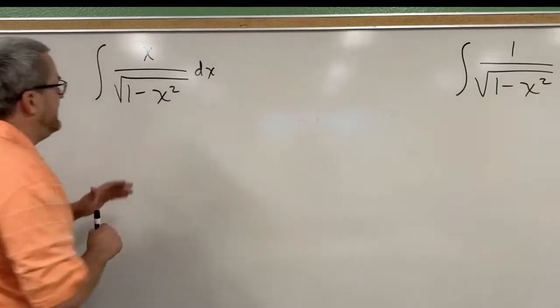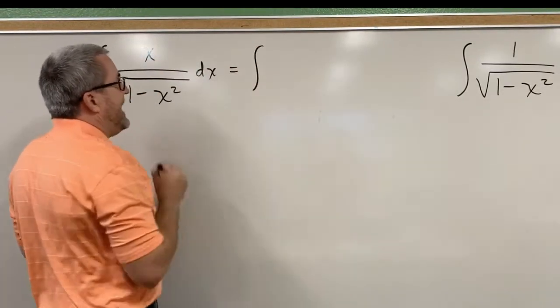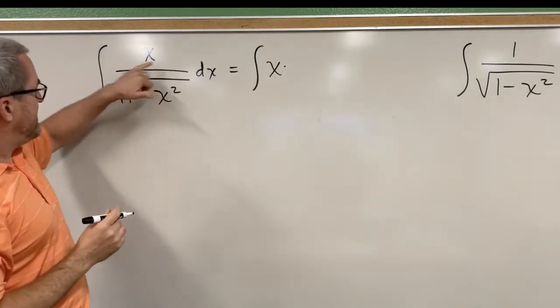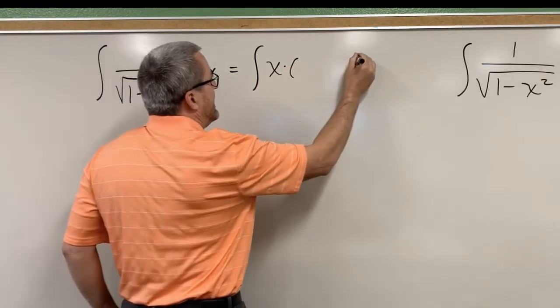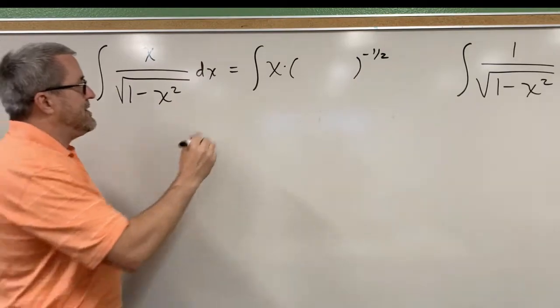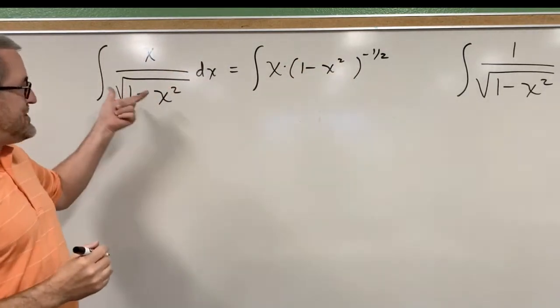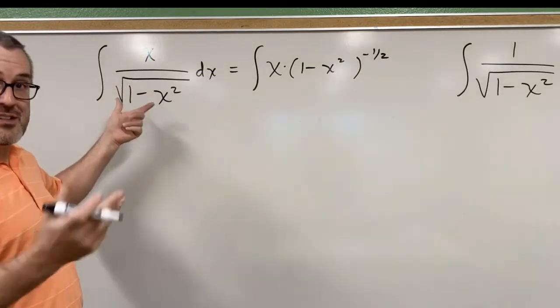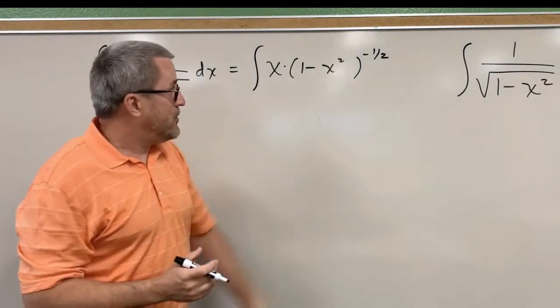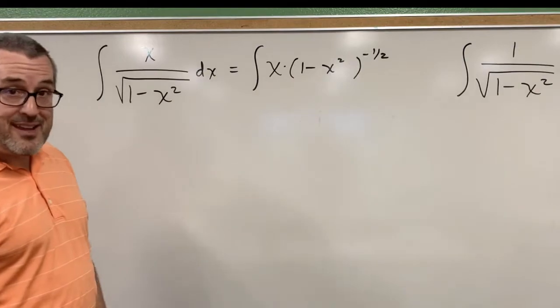In this case, if I rewrite this, you'll see it more clearly. Algebraically speaking, that numerator of x, instead of divided by the square root, can be multiplied by that binomial to the negative one-half power. Just let me remind you of the algebra there. A square root is equivalent to writing as a one-half power. And because it's in the denominator, we make that a negative one-half power. And so this and this are algebraically the same thing.